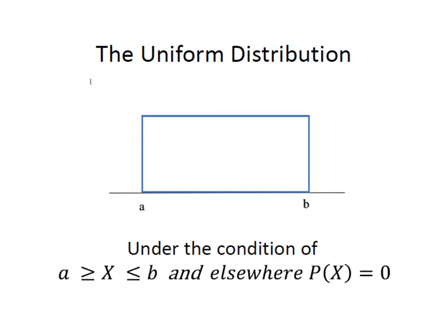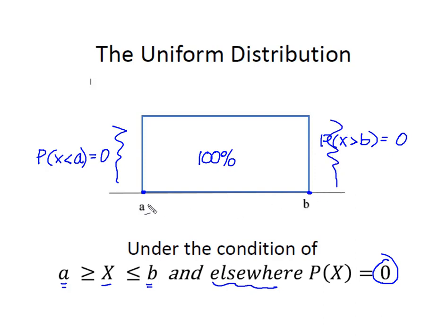The last and maybe the most important characteristic of this uniform distribution is it exists under the condition that our value of x will always be greater than or equal to a, less than or equal to b, and elsewhere it's going to be zero. So what we know is that 100% of the values of x will fall between a and b. And what that means is that the probability that x is greater than b will always be equal to zero, and the probability that x is less than a will always be equal to zero. In other words, nothing exists on either side of the distribution.